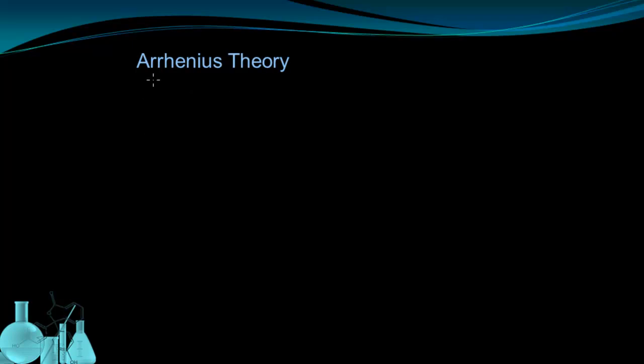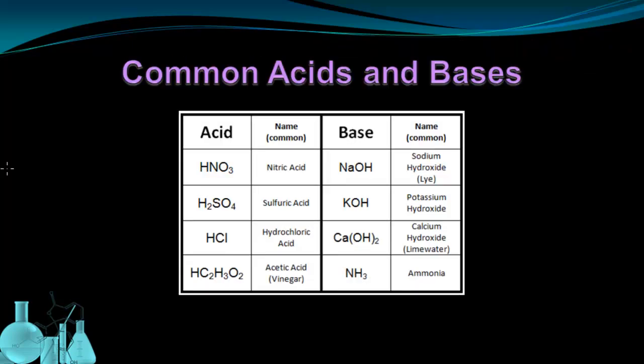And we call his definition the Arrhenius theory of acids and bases. So Arrhenius basically said that acids contain the hydrogen ion and that they release it when they ionize. So if we look back at our list of common acids and bases and we look through the acids, you're going to see that each of these acids has an H in it.